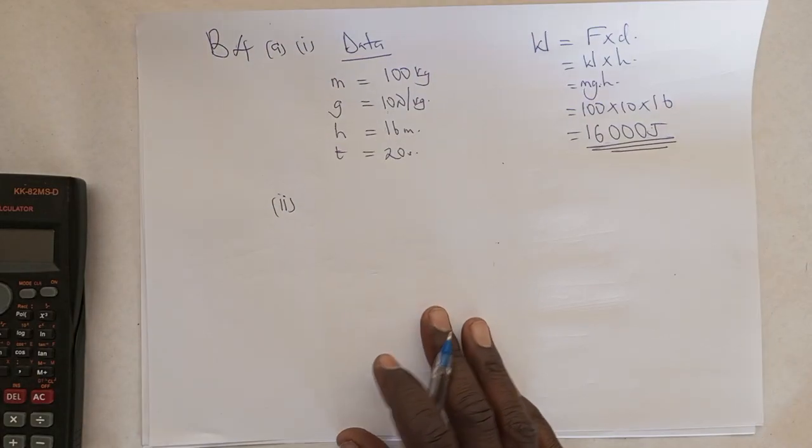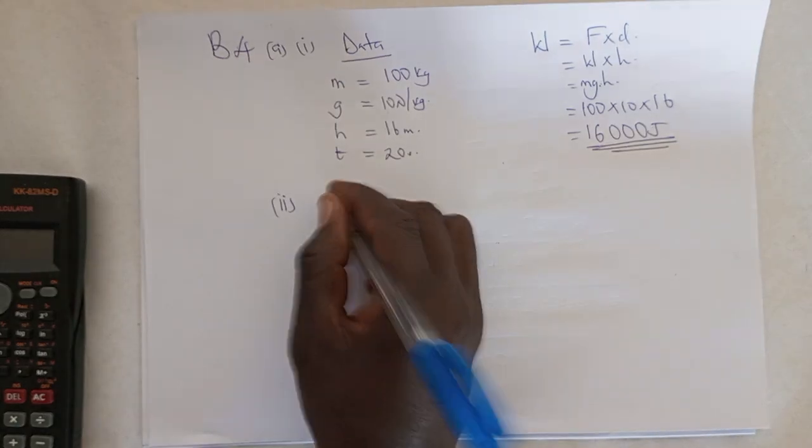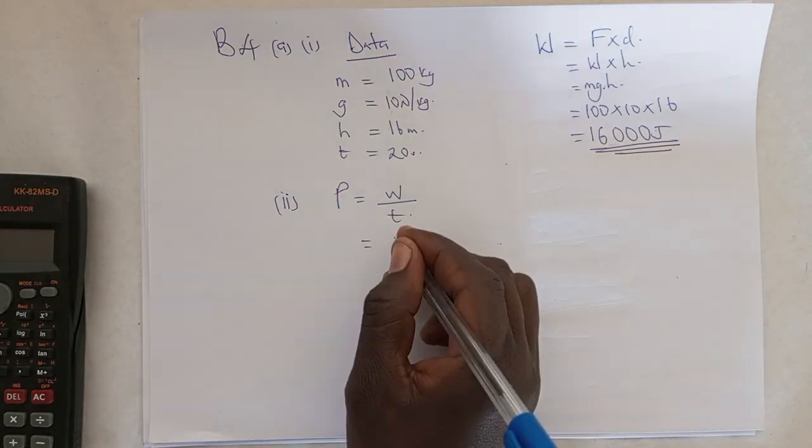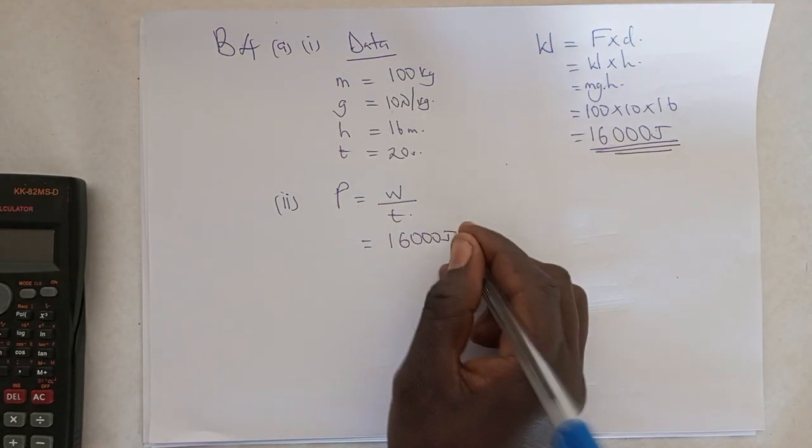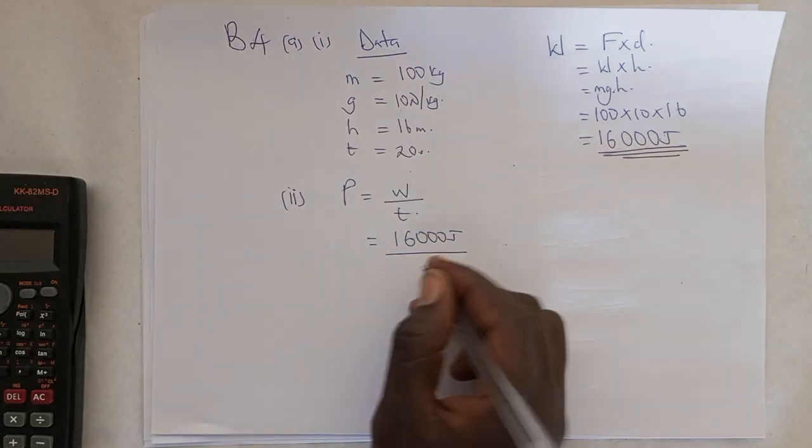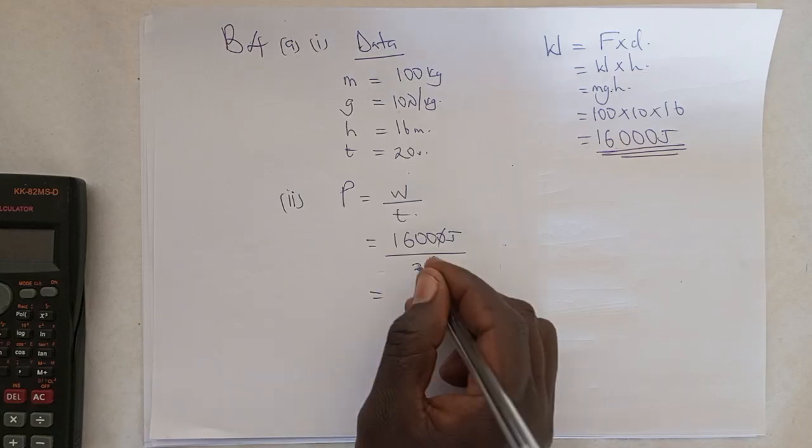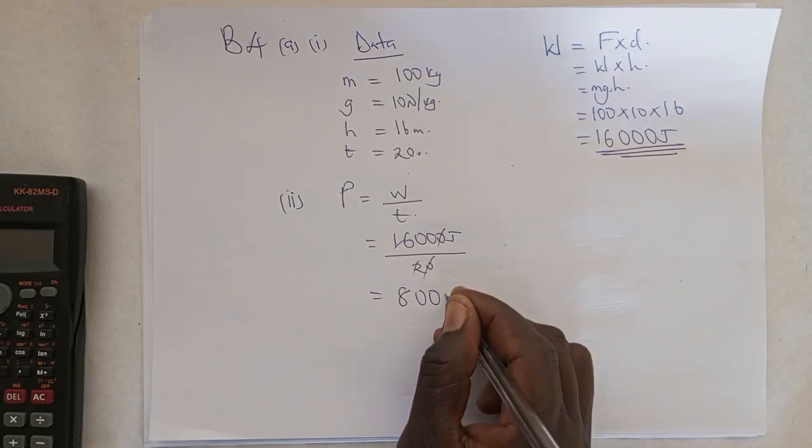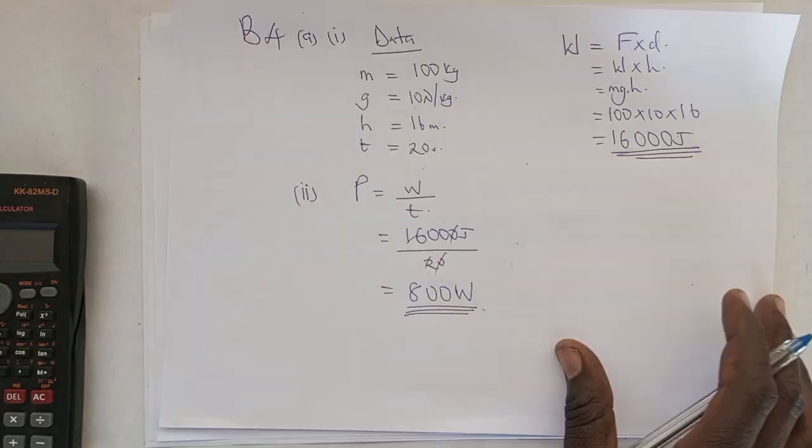They are demanding for power. So the question there would be power is equal to work done over time taken. What is the work done? 16,000 joules divided by the time taken, which is 20 seconds. And when you divide there, it is 800 watts. Power is calculated in watts.